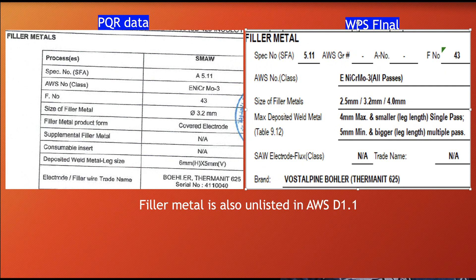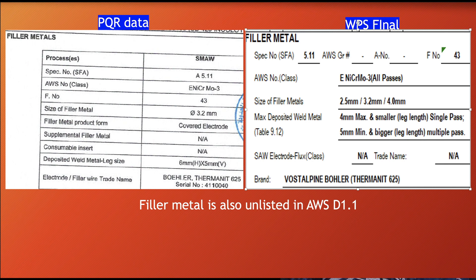Now we go to the second block, which is filler metal. From the PQR data we can see the SFA number is A5.11 and the filler metal classification is ENiCrMo-3. 'E' means covered electrode. The F-number is 43, the size of the filler metal is 3.2 mm, and the deposited weld metal thickness is 6 mm.